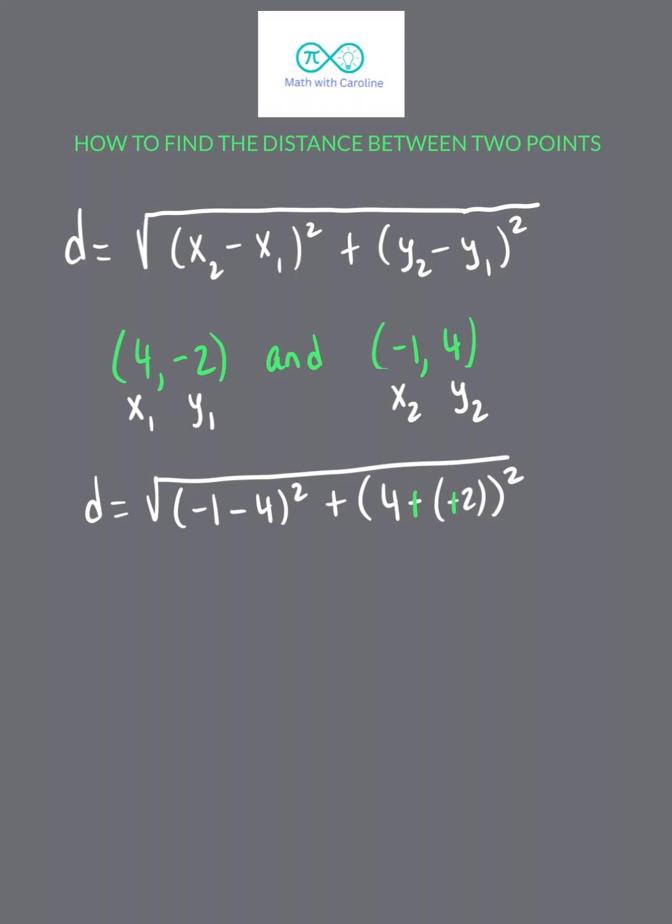So here we have the distance is the square root of -1 minus 4 is -5, and 4 plus 2 is 6. -5 squared is 25, 6 squared is 36. Now we're ready to add 25 and 36, and so we get 61.